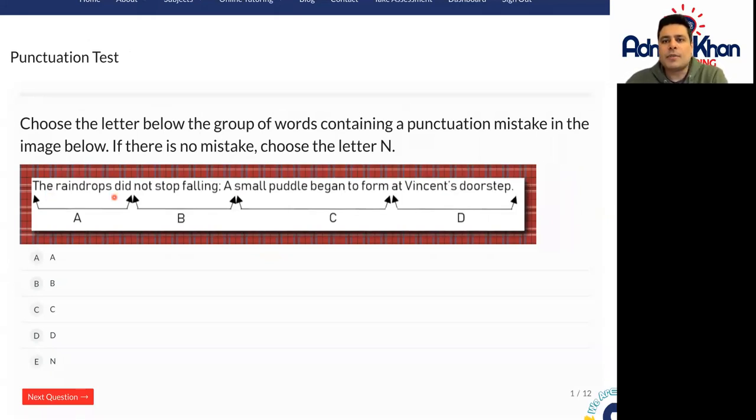The raindrops did not stop falling, a small puddle began to form at Vincent's doorstop. So where do we think the punctuation error is here? Remember, we're not looking for spelling mistakes, we're only looking for punctuation errors. If there is no mistake, then choose the letter N.